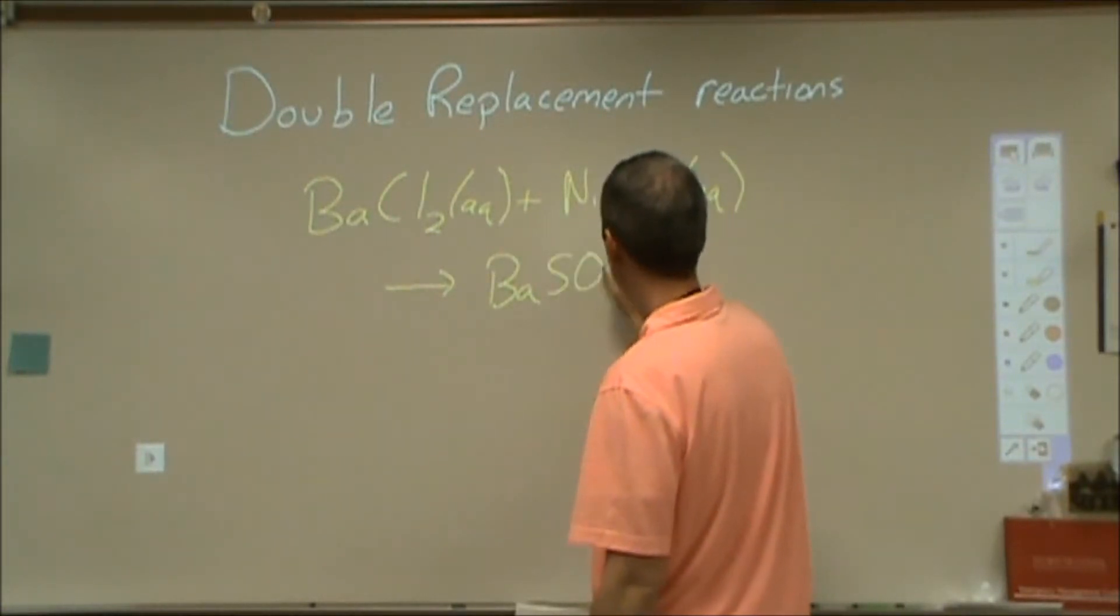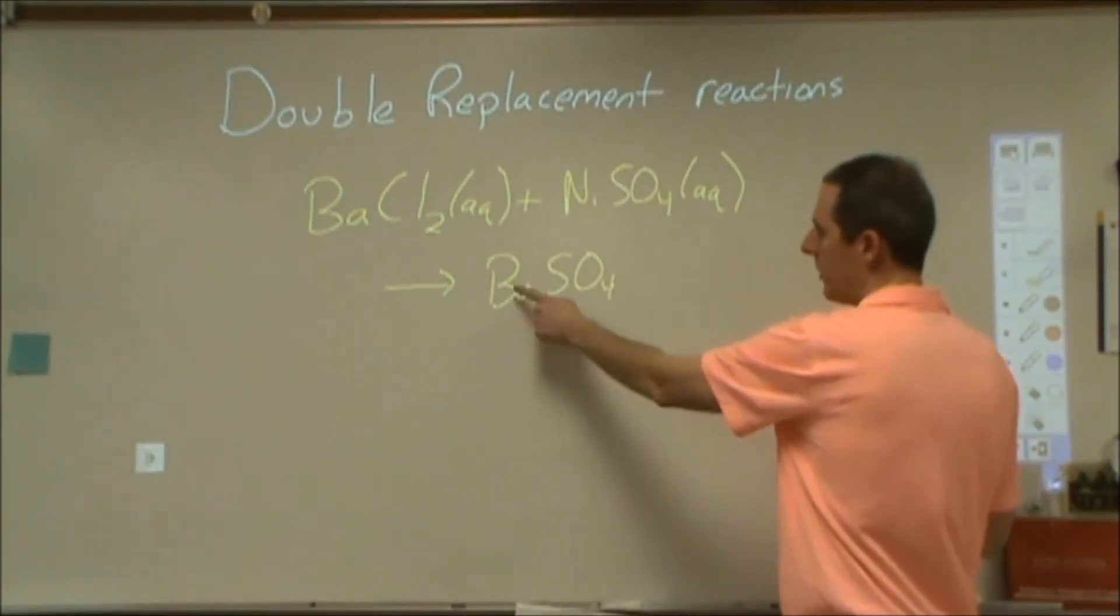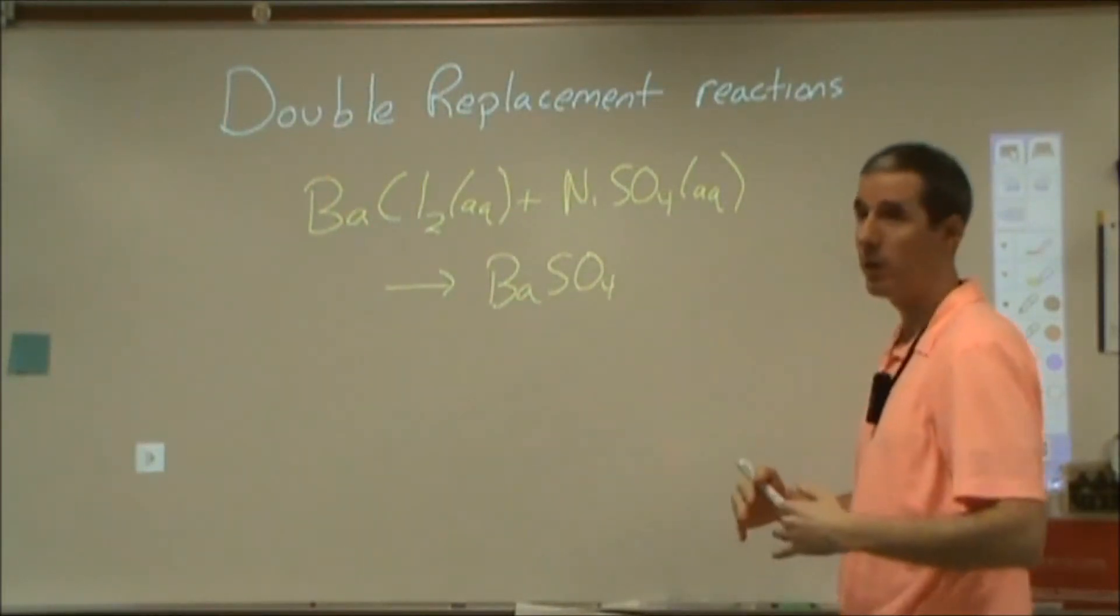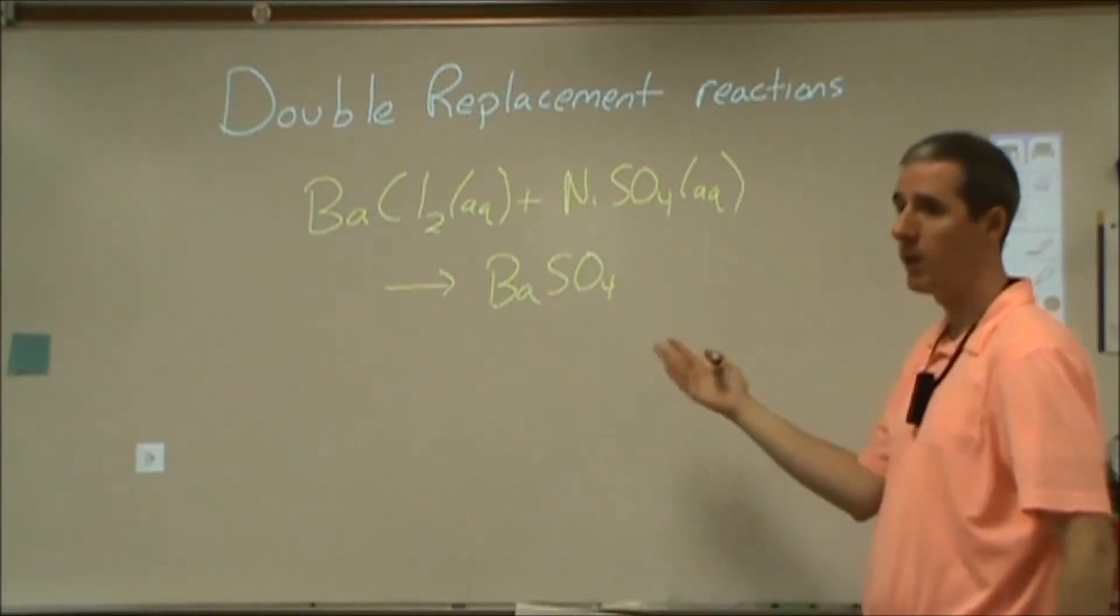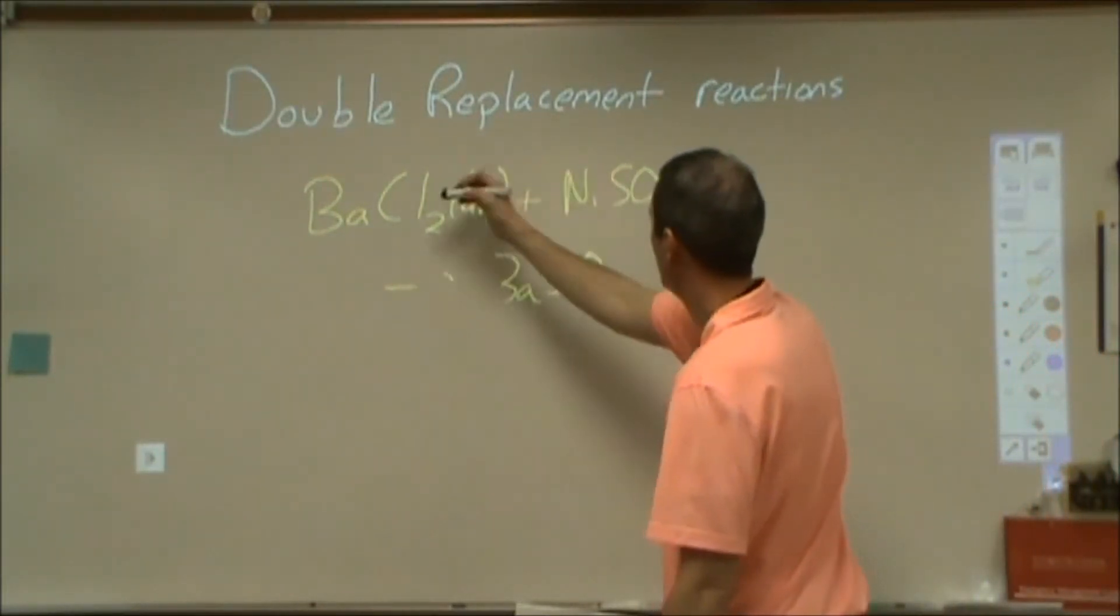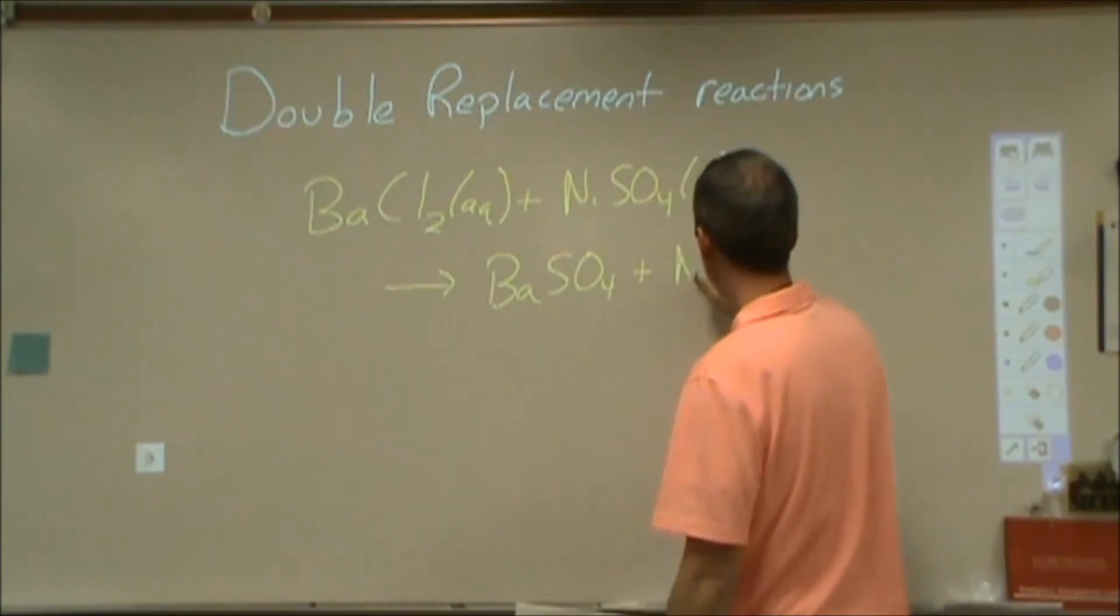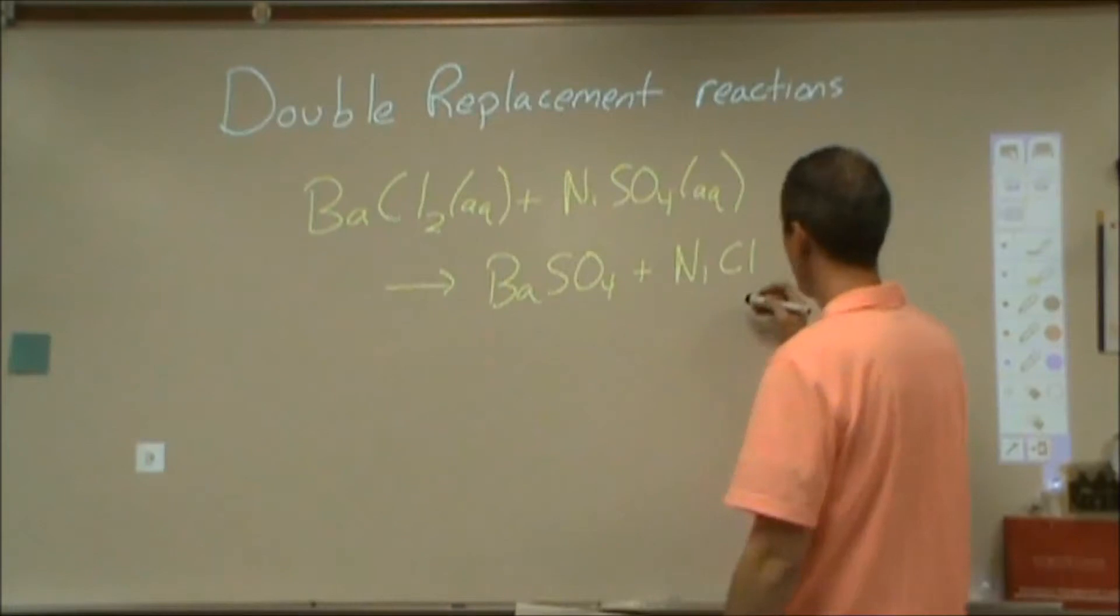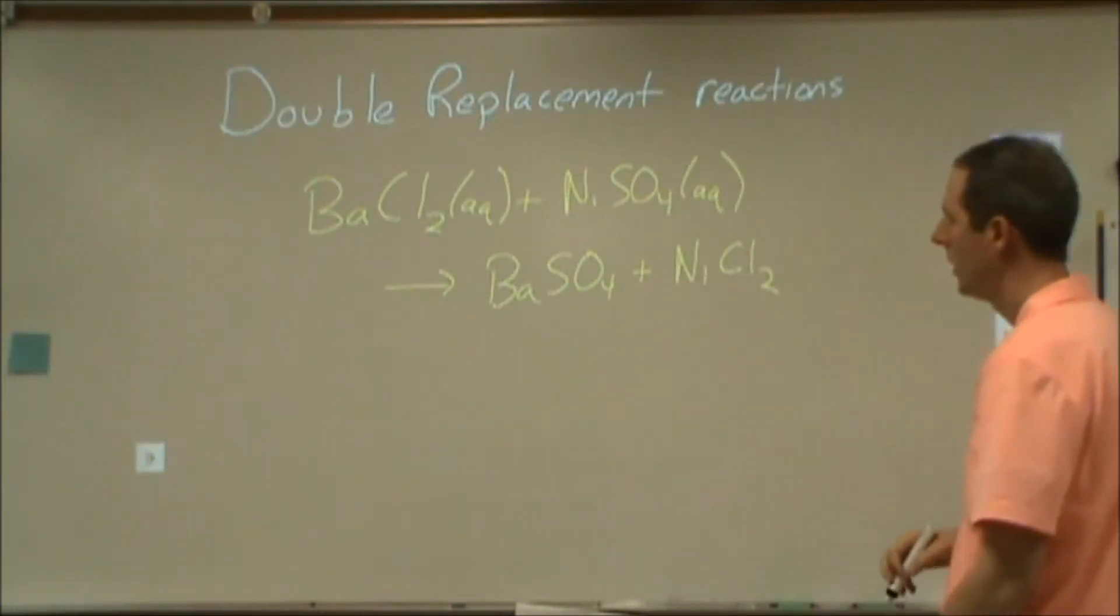We're going to end up with the barium and sulfate. Barium is a two plus charge, and sulfate is a minus two charge. So we do need to use charges, and whatever we start with is what we'll end with with charges. There's no electronic changes here. And the nickel, nickel is a plus two charge to start, and ends up with chloride, which is minus one charge. So therefore, these would be our formulas.